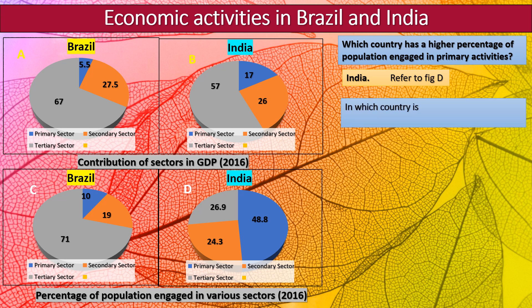The next question: in which country is the contribution of the tertiary sector greater in the GDP? The contribution of the tertiary sector is 67% in Brazil and 57% in India. The tertiary sector is shown in gray. So the contribution of the tertiary sector is more in Brazil than in India — the answer is Brazil.